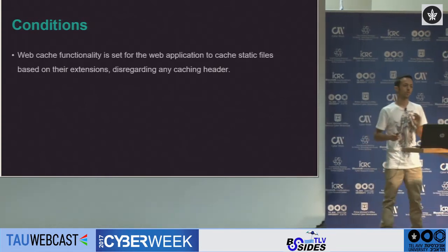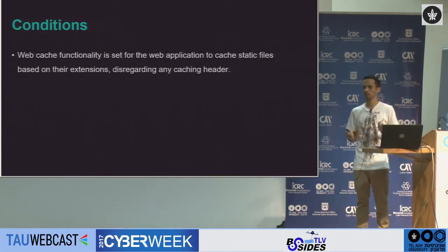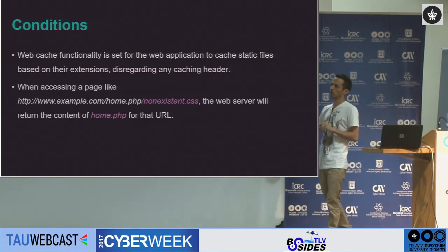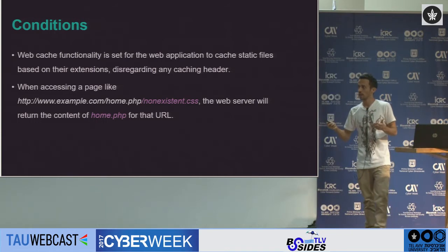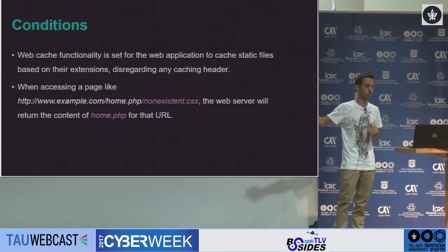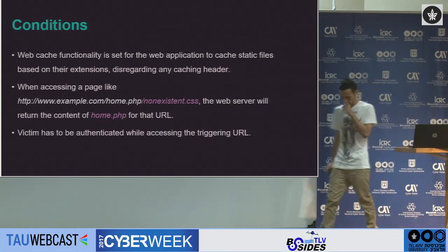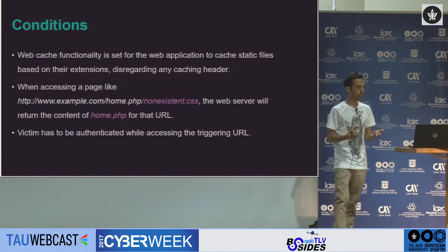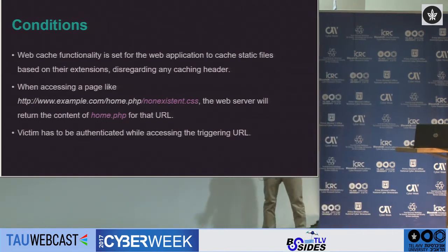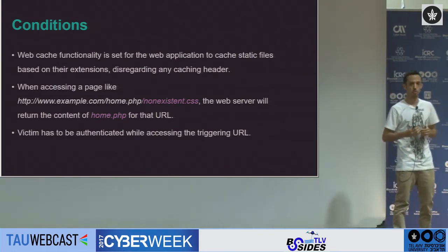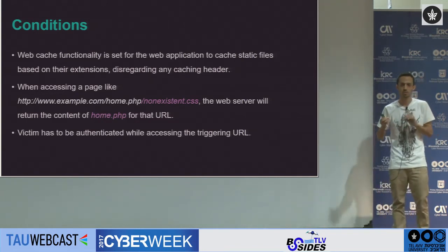What are the conditions for the web cache deception attack to occur? First, web cache functionality is set to cache static files based on their extensions, disregarding any caching headers. Second, when accessing a page like example.com/home.php/nonexistent.css, the web server returns the content of home.php. Third, the victim must be authenticated while accessing the triggering URL. After posting my blog explaining this vulnerability, people asked me 'why the hell' would these technologies meet these attack conditions.